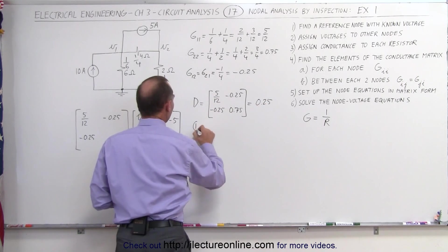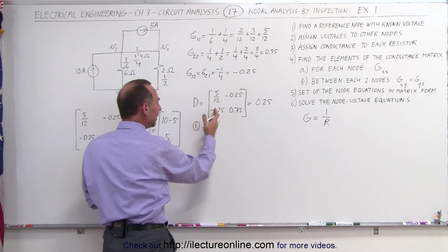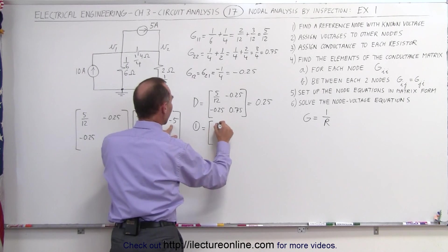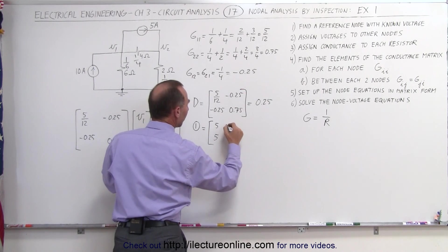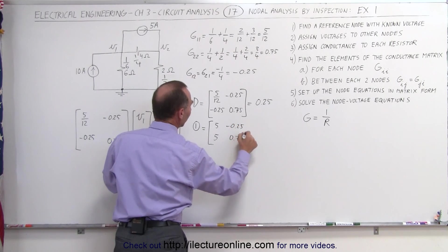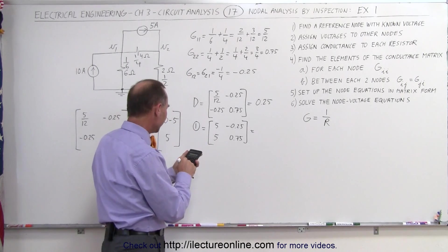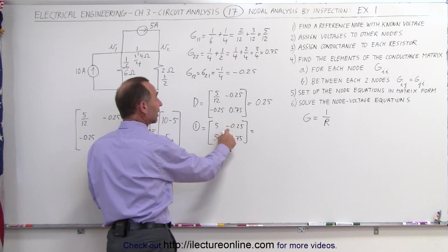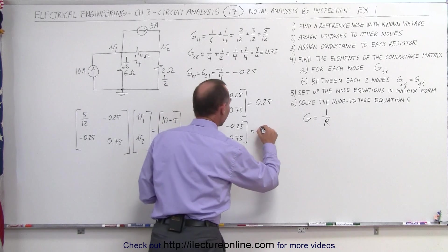The matrix to find the first voltage is going to be equal to the same matrix as this, but with these elements right here replaced by the current elements. So 10 minus 5 is 5, this would be 5, we keep that column, minus 0.25 and 0.75. So when we work this one out, 5 times 0.75, and now subtract the product of those two, but we have a negative there, negative times negative is a positive, so we add 1.25 and we get 5.